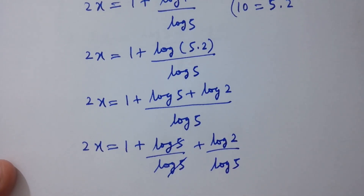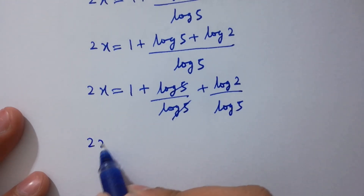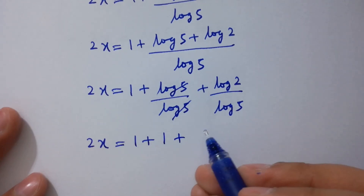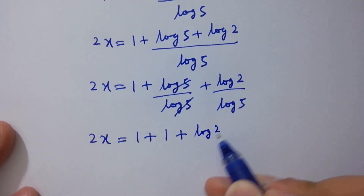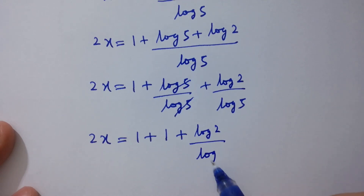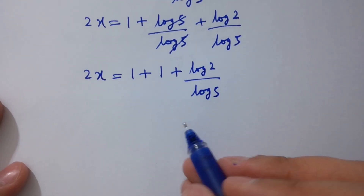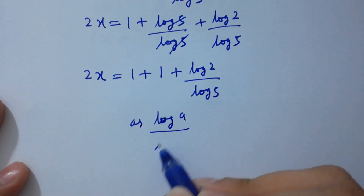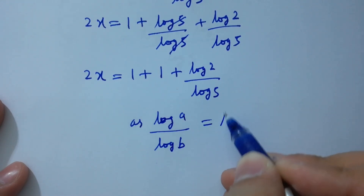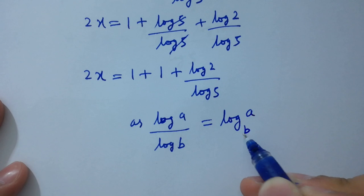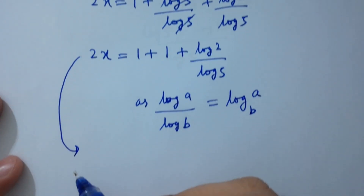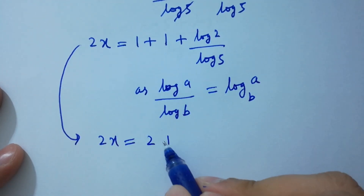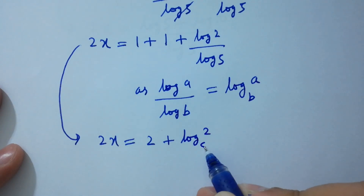Log 5 and log 5 cancel, giving 2x equals 1 plus 1 plus log 2 over log 5. As log a over log b equals log a to the base b, 2x equals 1 plus 1 plus log 2 to the base 5, which is 2 plus log 2 to the base 5.